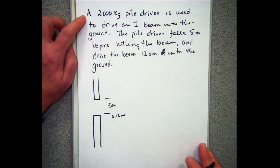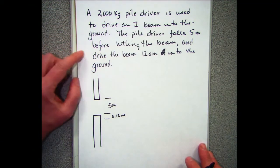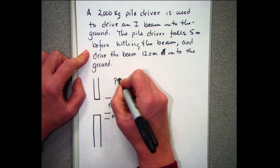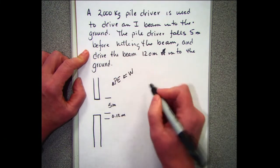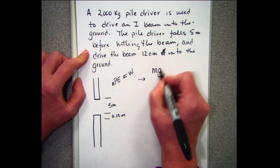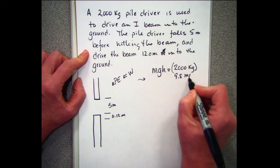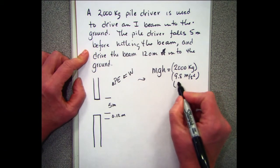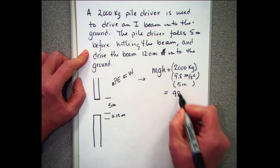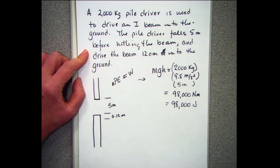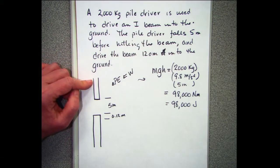Initially we have a 2,000 kilogram pile driver falling five meters before hitting the beam, then pushing the beam into the ground. We can look at the potential energy or change in potential energy: that's mgh = 2,000 kg × 9.8 m/s² × 5 m = 98,000 joules of energy available to do work.